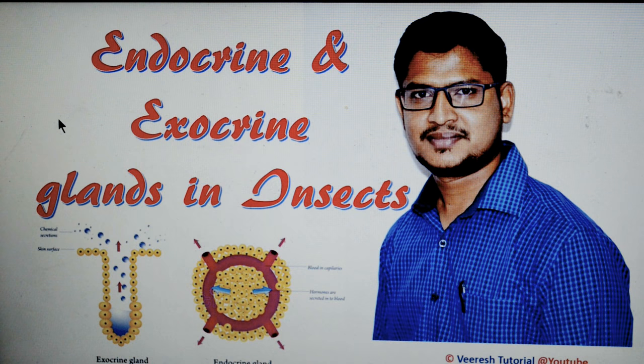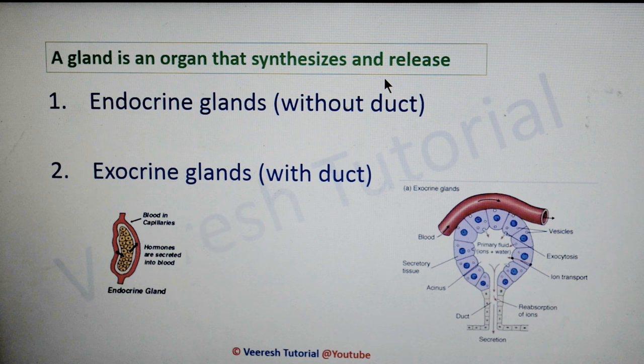Hello friends. In this video I will be explaining about endocrine and exocrine glands in insects. A gland is an organ that synthesizes and releases products, substances, or hormones. Based on the presence or absence of ducts, there are two types of glands present in insects.